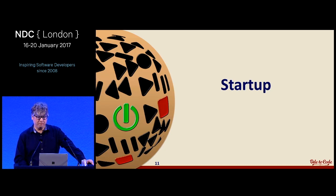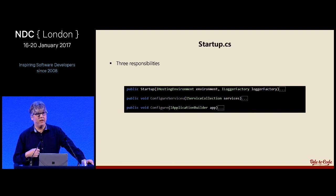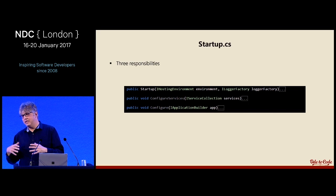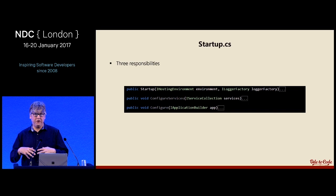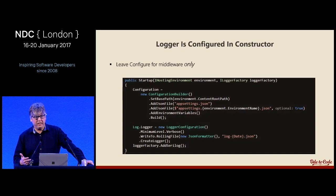Let's talk about startup code. When I look at a startup.cs file in an ASP.NET Core project, I think it has three responsibilities: configure the configuration system — telling it about appsettings.json, environment variables, and so on — configuring the container in the ConfigureServices method, and the Configure method which builds your HTTP processing pipeline by putting all the middleware in place. I've seen startup.cs files in non-trivial projects start to grow a little bit out of control, so I came up with some opinions about that.